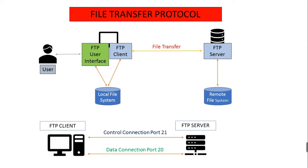The client side of FTP sends the user identification, password, and commands to change the remote directory over this control connection. When the server side receives a command for a file transfer over the control connection, it initiates a data connection to the client side. If during the same session the user wants to transfer another file, FTP opens another data connection. The control connection remains open throughout the duration of the user session, but a new data connection is created for each file transferred within a session.